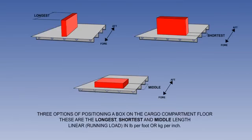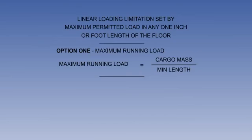Let us look first at linear or running loading limitations. The linear or running load limitation — pounds per linear foot or kilograms per unit inch — protects the underfloor frames from excessive loads. The limit is set as the maximum permitted load in any one foot, inch or metre length of the floor, irrespective of load width. We can find by simple formula three options available to position the load on the cargo compartment floor and whether any one of them would exceed limits. Finding maximum running load is achieved by dividing the cargo mass by the shortest length.